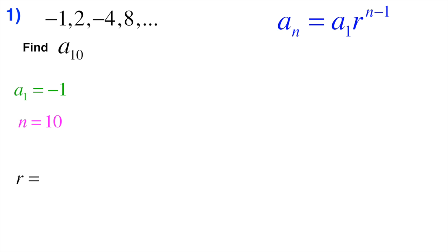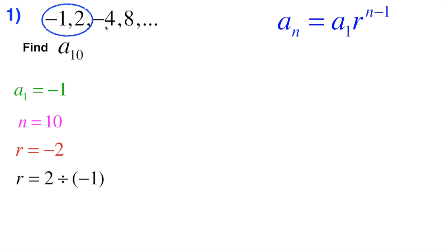Now, to find the r value — the ratio — here's what we do. We take two consecutive numbers; I'll use the first two. We divide the second one by the first one: 2 divided by negative 1 gives negative 2. To confirm it's geometric, we also check the third term divided by the second: negative 4 divided by 2 also gives negative 2. So the common ratio is negative 2.